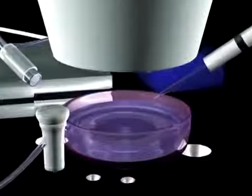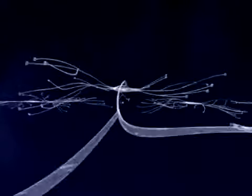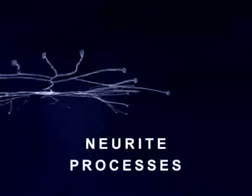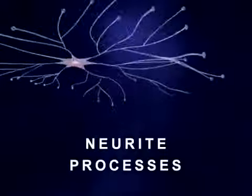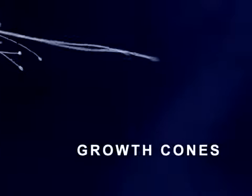To better understand mercury's effect on the brain, let us first illustrate what brain neurons look like and how they grow. In this animation, we see three brain neurons growing in a tissue culture, each with a central cell body and numerous neurite processes. At the end of each neurite is a growth cone where structural proteins are assembled to form the cell membrane.